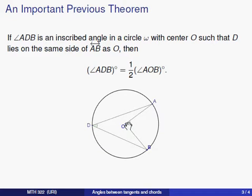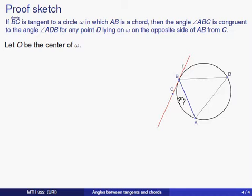So again, the setup is that BC is tangent, AB is a chord, and D is any point on this side of AB. We're showing that angle ABC is congruent to angle ADB. Now, we'll start as we usually do, by talking about the center of the circle.